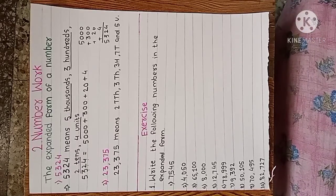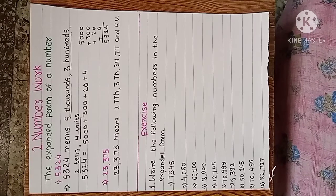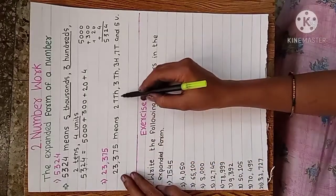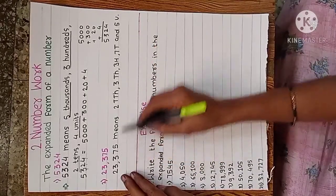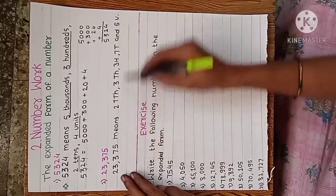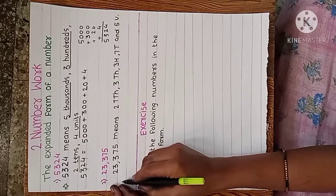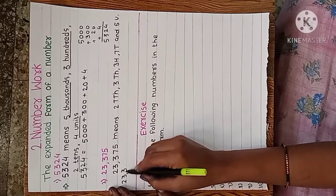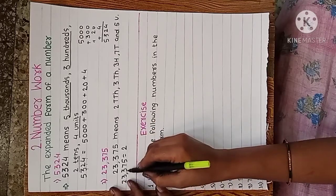Now see the next example. 23375 means two ten thousands, three thousands, three hundreds, seven tens and five units. The expanded form of this is: two and how many digits after two?